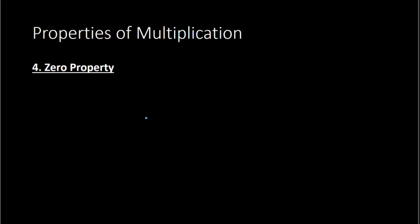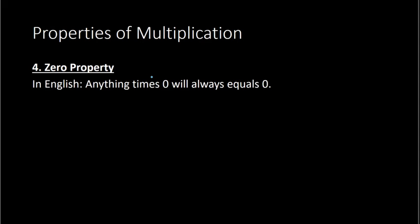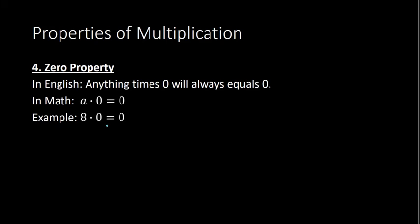Next we have what is called the zero property. The zero property says that anything times 0 will always equal 0. In math notation, if we have some value a multiplied by 0, the answer is going to be 0. With actual numbers, 8 times 0 also equals 0, because anything times 0 will always equal 0.